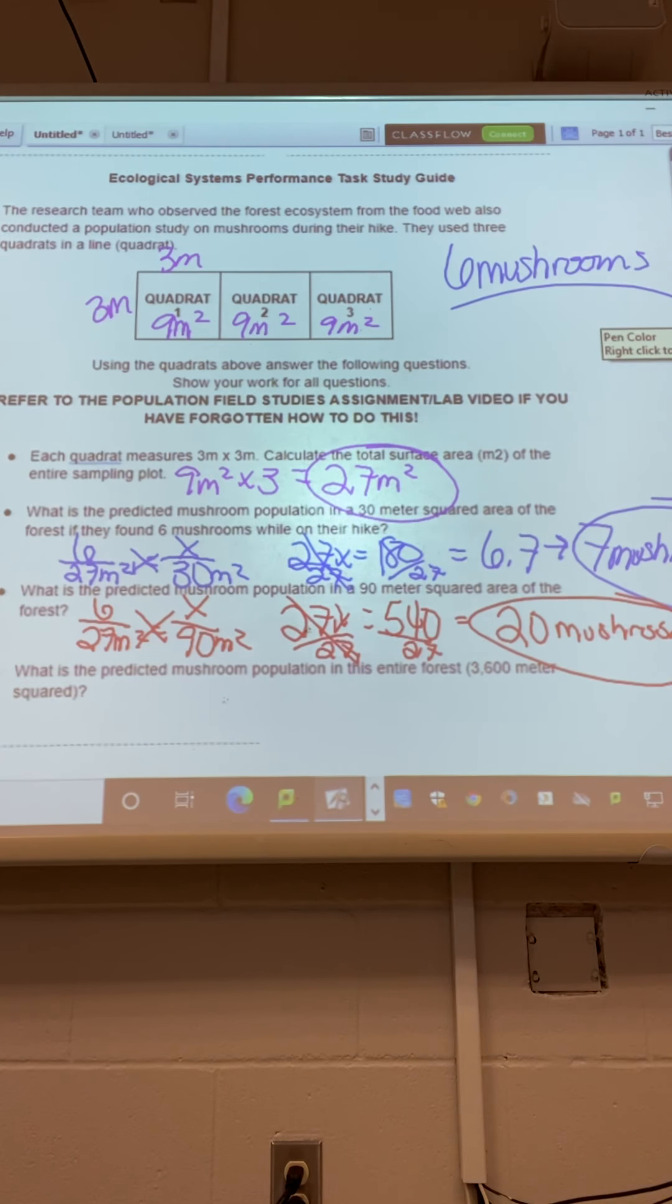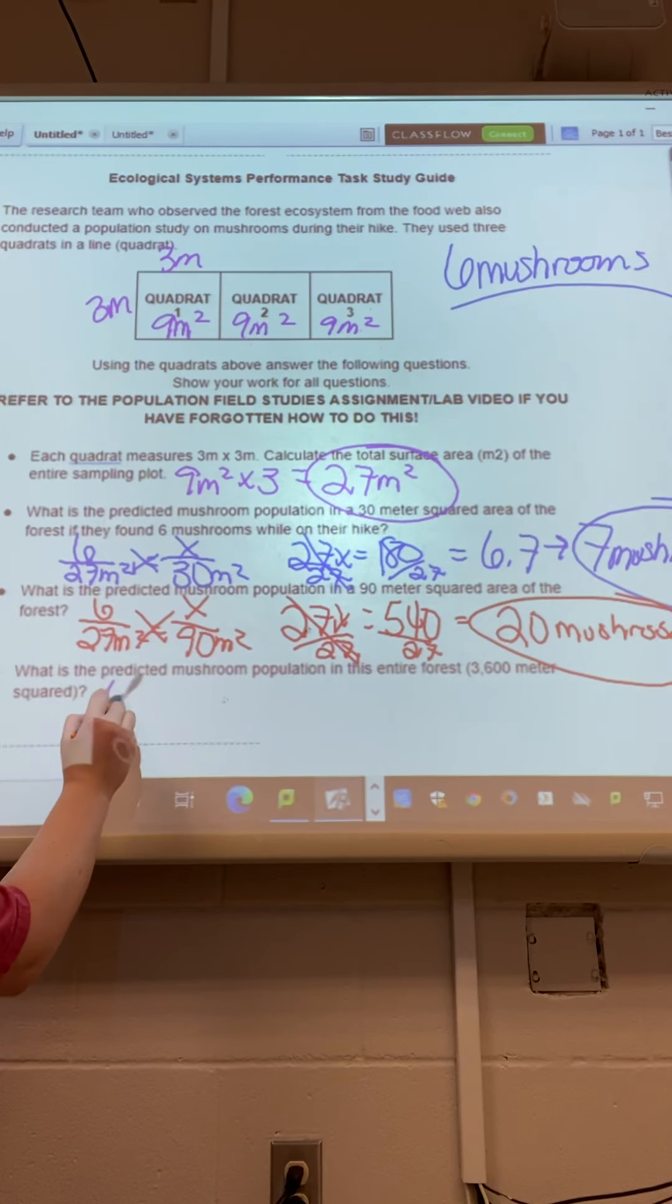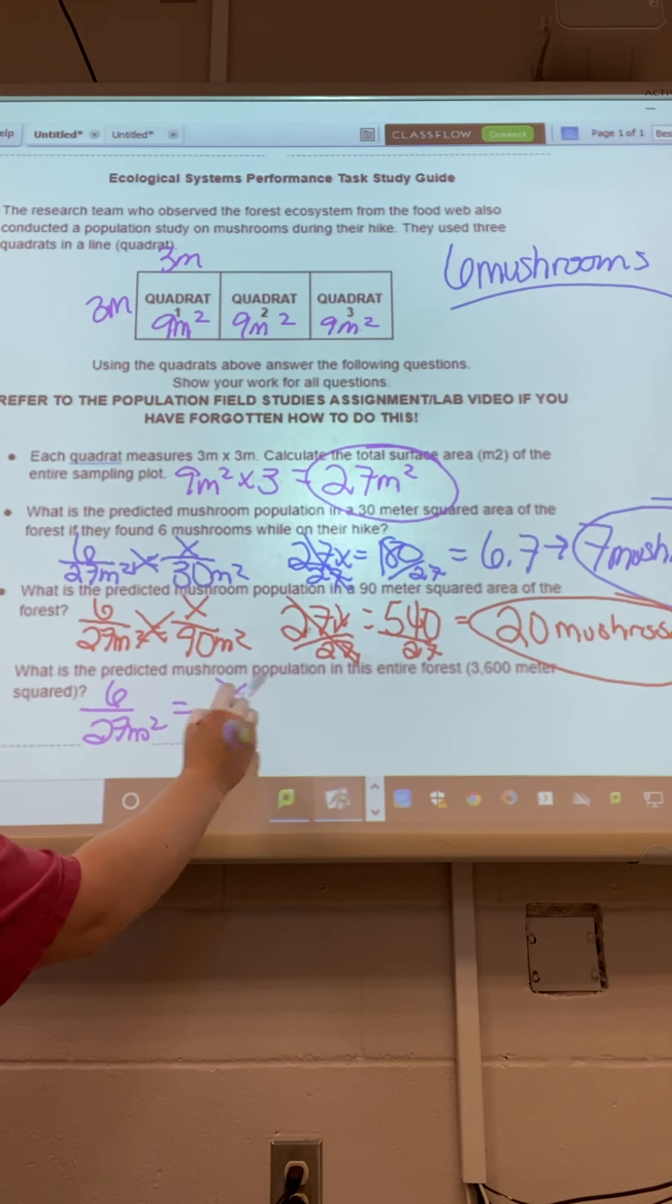What is the predicted mushroom population in this entire forest if the forest was 3,600 meters squared? So same thing. 6 divided by 27 meters squared. Set that equal to 3,600 meters squared. Do my math.